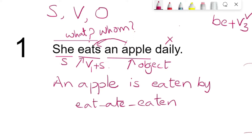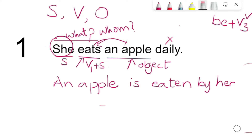We use the standard preposition 'by' — sometimes it changes. Now, the subject 'she' must be changed to its object form. Looking at the pronoun table, 'she' changes to 'her.' So the passive form is: 'An apple is eaten by her daily.' That is the passive form of the given sentence.